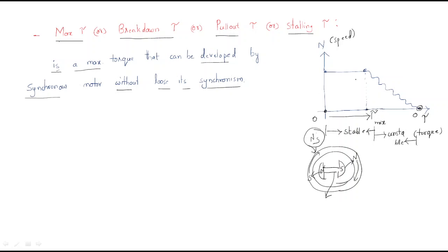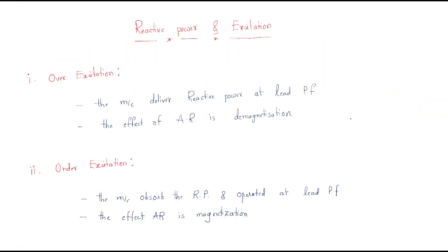Maximum torque simply means the torque which is available for stable operation. Whenever the motor becomes unstable at that point, the torque is called the maximum torque.